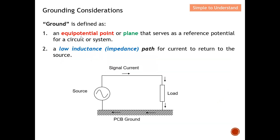Let's start by defining what ground is. Ground is defined as an equi-potential point or plane. It basically serves as a reference potential for a circuit or system. Looking at this diagram, you can see a source driving a load through a current — the current is supplied to drive the load, and after passing through the load, it returns back to the original source.